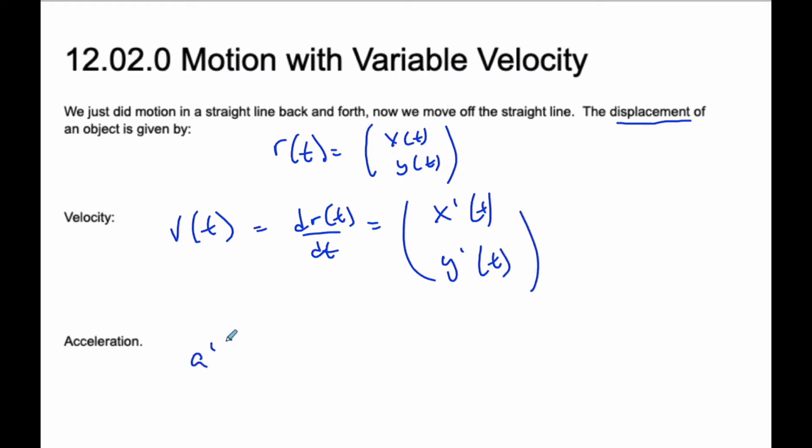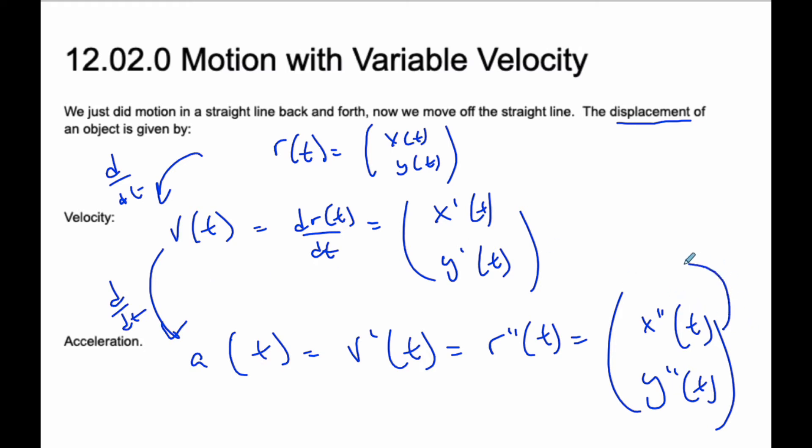Similarly, if I want the acceleration, the acceleration is simply going to be the derivative of the velocity or the second derivative of the displacement. So I know it's going to be x double prime of t, y double prime of t. And so I go from displacement to velocity, derivative, velocity to acceleration, derivative. If I'm going from acceleration to velocity, I do integral. From velocity to displacement, I again do integrating. And so there is a definite relationship between them all.